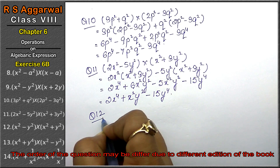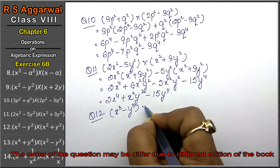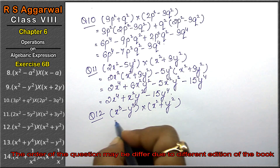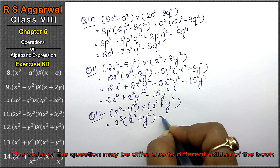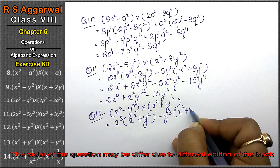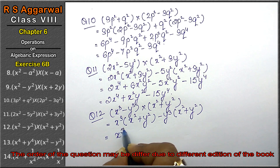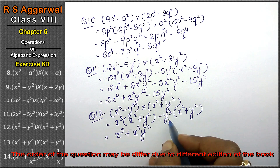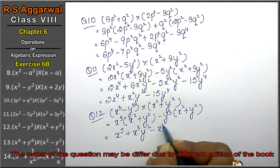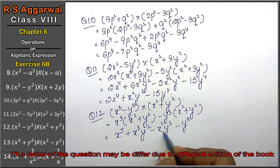Let's do question number twelve of Exercise 6B, that is algebraic expressions. Question number twelve is (x cubed - y cubed) multiplied by (x squared + y squared). So: x cubed multiplied by (x squared + y squared), minus y cubed multiplied by (x squared + y squared). We get x to the power 5, plus x cubed y squared, minus x squared y cubed, minus y to the power 5. All four terms are different, so this is the answer.